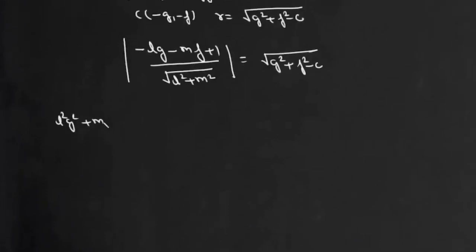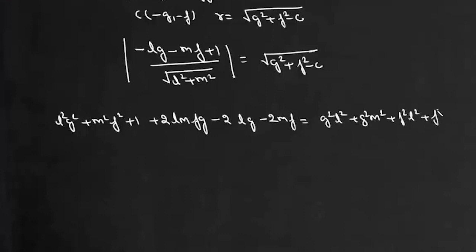l²g² + m²f² + 1 + 2lmgf - 2lg - 2mf will equal g²l² + g²m² + f²l² + f²m² - cl² - cm². Here g²l² will cancel and m²f² will also cancel.